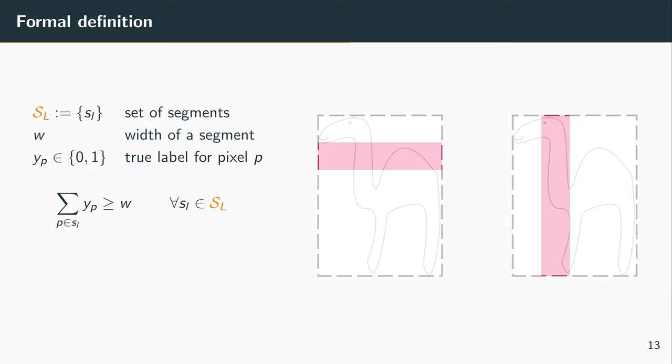So we can write that in a bit more formal way. We can define big SL as a set of all the segments of a box, so all the horizontal segments and all the vertical segments. Small sL is a specific segment, so let's say this pink segment on the left. And W is its width.